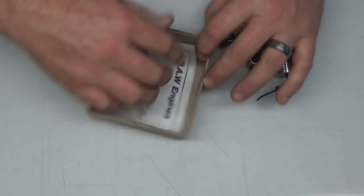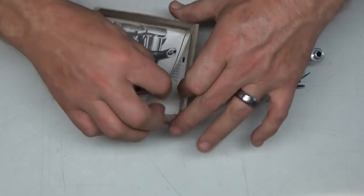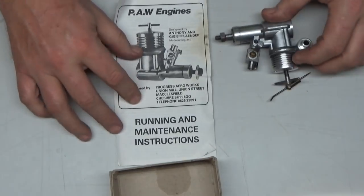Let's see what we got here. We have engine, needle valve, and instruction sheet.